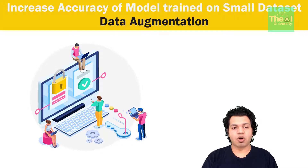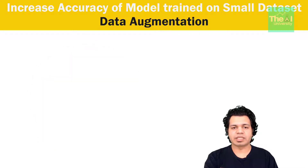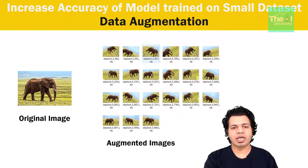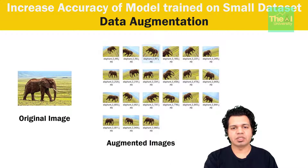If we have a small dataset with a fewer number of images, then we can create variations of that image data. For example, see this original image here — alongside we have several variations of it. You can see the same image has been rotated, flipped, translated, skewed, shifted, zoomed, etc. The technique we use for creating these variations is called data augmentation, which is a very effective technique when it comes to computer vision.